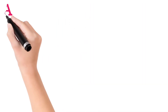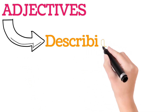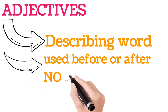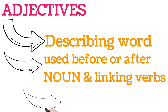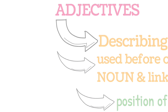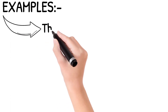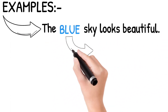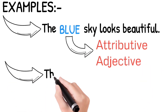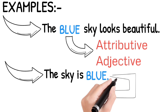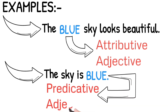What is an adjective? An adjective is a describing word. It can be used before a noun, after a noun, or after a linking verb. We can easily identify an adjective from its position in a sentence. For example: 'The blue sky looks beautiful.' Here, 'blue' is an adjective used as an attributive adjective. 'The sky is blue' — here 'blue' is also an adjective but its position is predicative. Attributive adjectives are used before a noun, e.g., 'blue sky.' Predicative adjectives are used after the noun and linking verb, e.g., 'The sky is blue.'